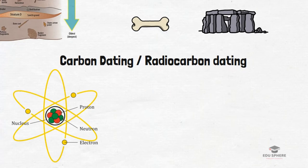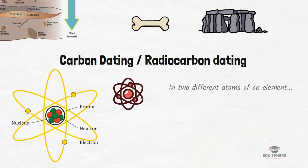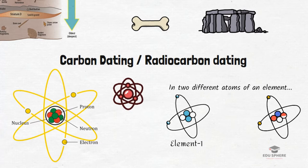As shown in this illustration, each element is made up of atoms and within each atom there is a central particle called the nucleus and the electrons surround the nucleus. Within the nucleus, we find neutrons and protons. Two different atoms of an element can have equal number of protons while having different number of neutrons.